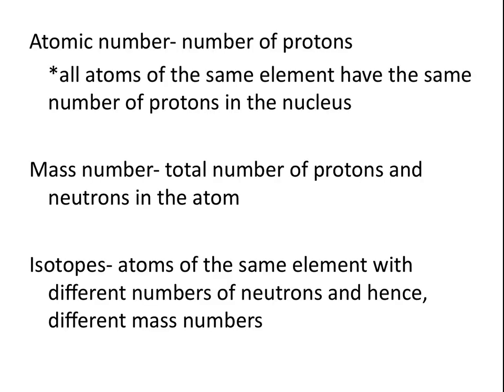The atomic number of an atom is the same as the number of protons. All atoms of the same element have the same number of protons in the nucleus, so it's the number of protons that defines what type of atom it is. The mass number is the total number of protons and neutrons in an atom, where isotopes are atoms of the same element with different numbers of neutrons and hence different mass numbers. Remember, for all isotopes of the same element, the number of protons remains the same.